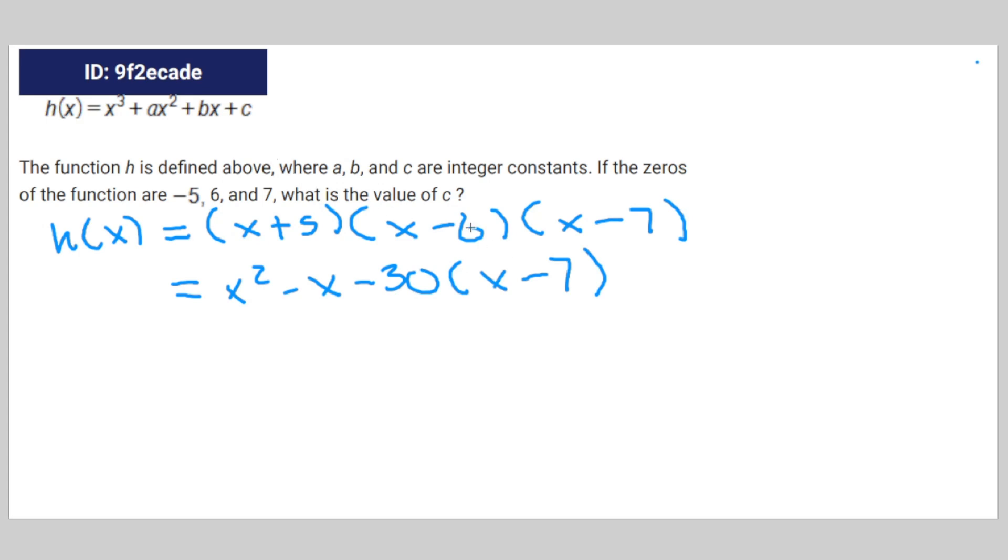And we're going to look for the constant of the expanded function. So that's going to be x cubed minus x squared minus 30x minus 7x squared minus 7x plus 210.